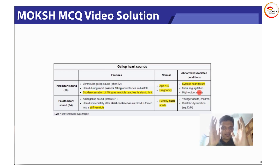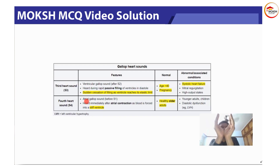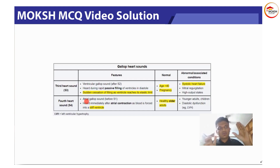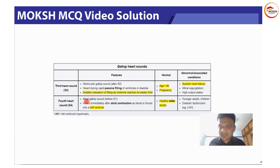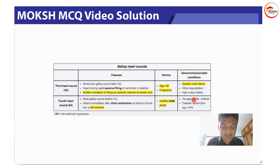In heart failure, the heart basically dilates — high output states mean the same thing. For the fourth heart sound, S4, it is the reverse of S3. Whenever your ventricle wall is stiff and thick, and blood is thrown toward that stiff ventricle due to atrial contraction, the ventricle makes an annoying sound known as S4.